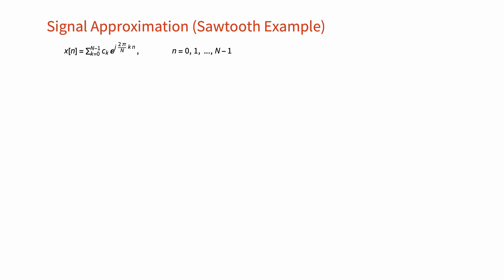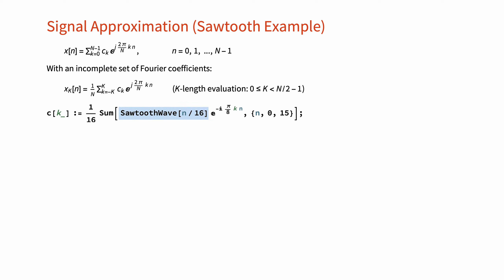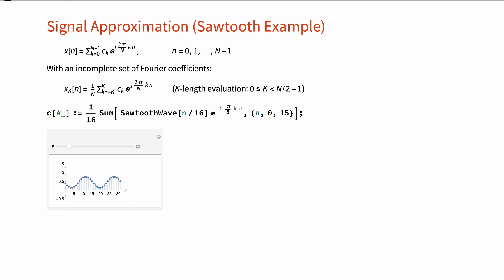The discrete time Fourier series is a finite summation; however, we are still interested in reconstructing the signal based on an incomplete set of Fourier coefficients. The k-length evaluation of the synthesis formula will give us an approximation to the original signal, as shown here. For example, here we have the synthesis of a discrete time sawtooth wave with period N equal to 16 from a subset of the Fourier coefficients. Changing the value of k in the approximation series, you can see how the sawtooth wave is reconstructed.